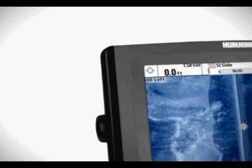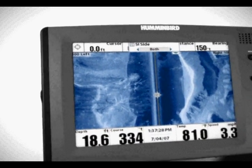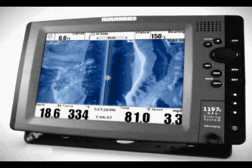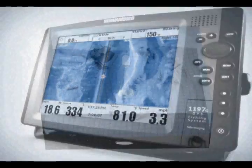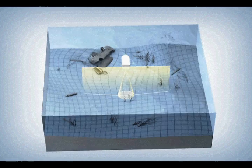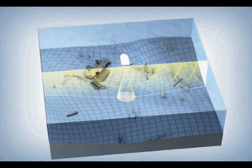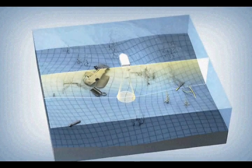Humminbird's side imaging sonar is a revolutionary sonar technology that makes your time on the water more productive. Unlike typical sonar, which looks straight down below the boat, side imaging sonar uses a razor-thin beam that projects up to 240 feet to both sides of the boat for 480 feet of coverage across the bottom.